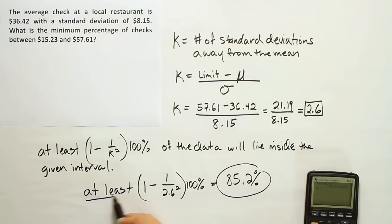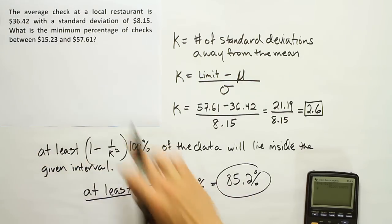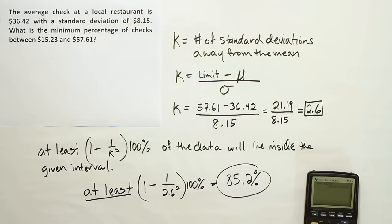Remember, this is the minimum percentage that's within that interval. So at least 85.2% of the checks will be within that interval. And that's it. That's the answer.